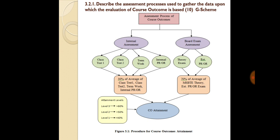The internal assessment consists of 30% weightage, which is the average of class test 1, class test 2, term work, and internal oral practical. The board exam consists of 70% weightage, which includes the theory exam and external oral practical — specifically the average of MSBT theory and external oral practical exam. From these two components, we can find the course attainment.